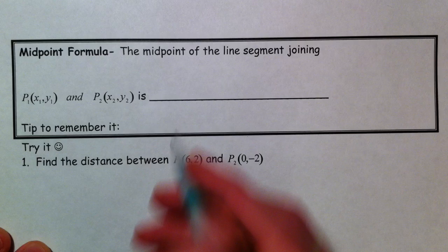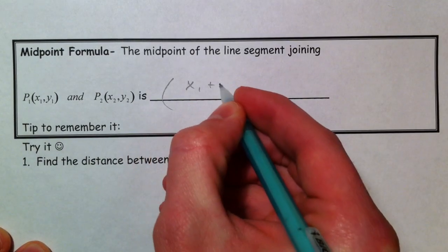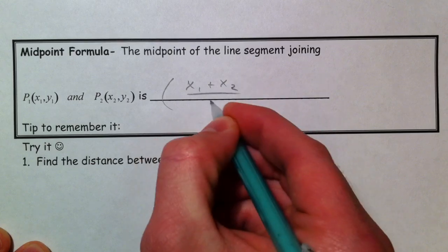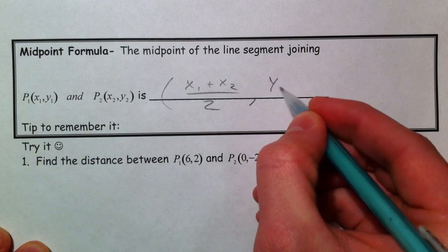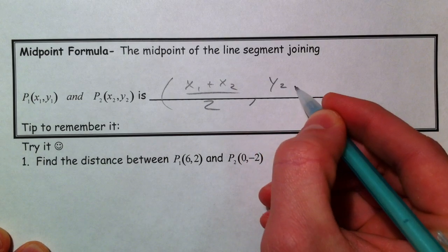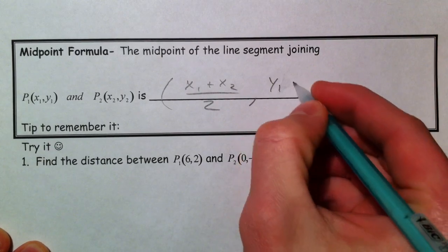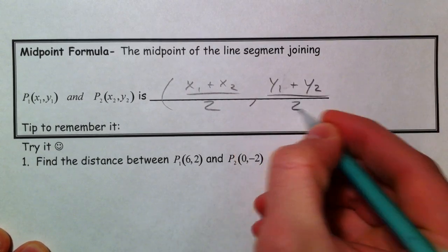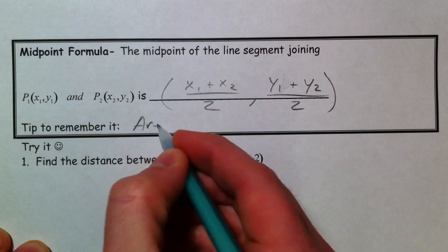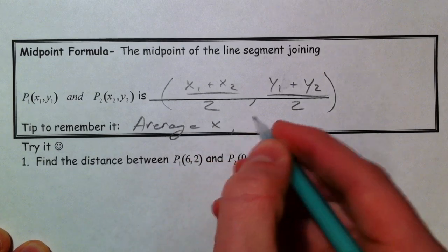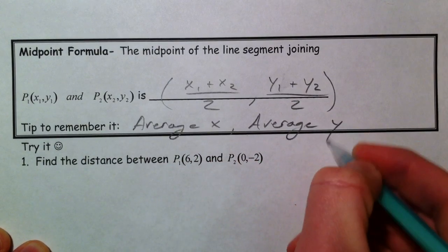So let's put it in a box to make it official. Midpoint of two points: (x₁ plus x₂ divided by 2, y₁ plus y₂ divided by 2). Notice that you can do x₂ plus x₁ and it doesn't make a difference at all. In the distance formula, same deal. Tip to remember it: average x, average y.